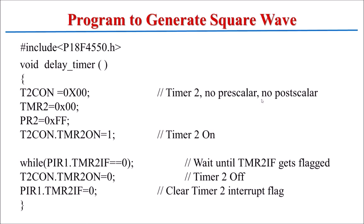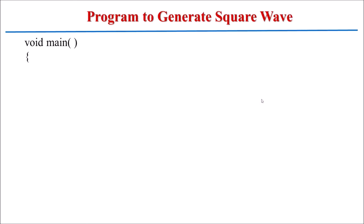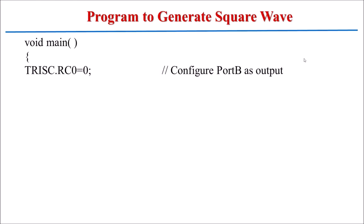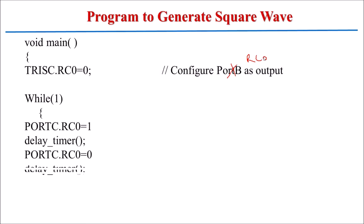After exiting the loop, we stop the timer and clear the flag bit so it can be set again for the next period. This is the delay function using Timer 2 registers. In the main program, we configure RC0 as an output port pin of Port C. In the while(1) loop, we send logic 1 to RC0, call the delay, then send logic 0 and call the delay again — this generates a square wave or flashes an LED.